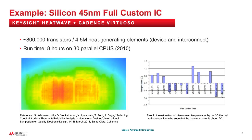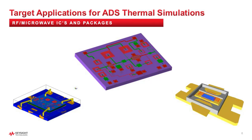This example illustrates HeatWave's capacity and accuracy. It shows published results from AMD on an IC that has 800,000 transistors and 4.5 million heat-generating elements, which includes devices and interconnects. AMD was very concerned about the temperatures of the interconnects between devices. The plot shows measured versus simulated with very good correlation to within a degree in most places. The focus of ADS is on RF microwave-type problems — specifically RF ICs and MIMICs along with their packages. The device counts for these ICs are a lot lower than that AMD example, but these devices come with their own unique sets of challenges.